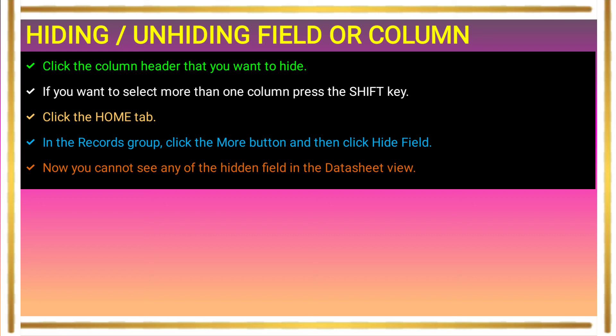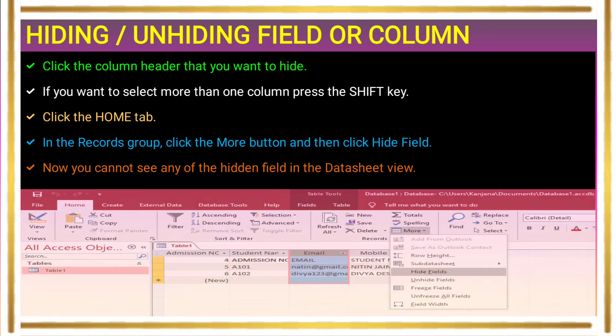This is the view of the hiding a field option. Go to the Home tab, select the Record group, and from the More drop-down options, select the Hide Field option. Click the Hide Field option — for example, on the email field — and the field will no longer be visible.